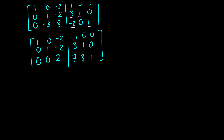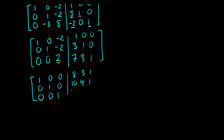Now we have to work on the third column — this entry needs to become a 1. We're just going to add the third row to the first, getting 1, 0, 0, 8, 3, 1. We're going to add the third row to the second, getting 0, 1, 0, 10, 4, 1. And then we're going to divide the third row by 2 so it becomes a 1, giving 0, 0, 1, 7/2, 3/2, and 1/2. So here we now have the identity matrix on the left side, and the right side should be A inverse.